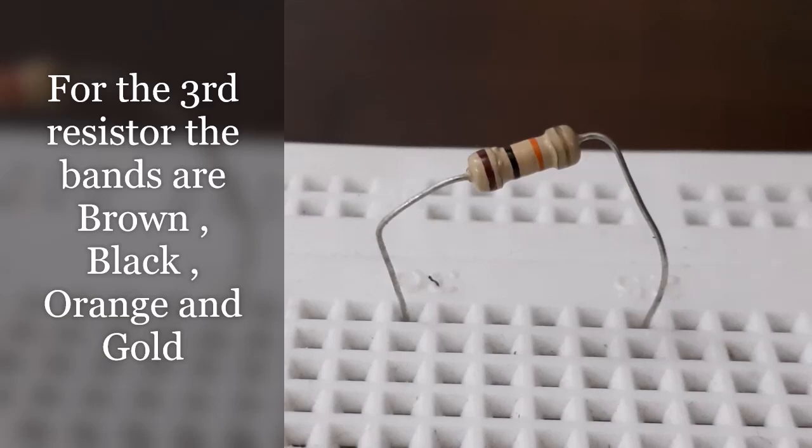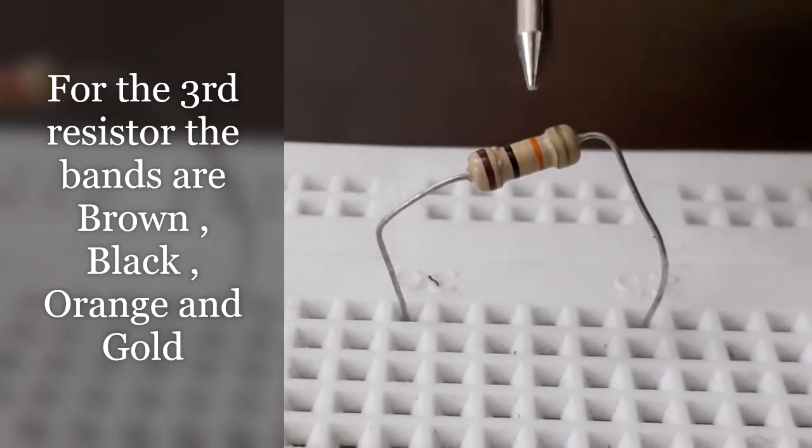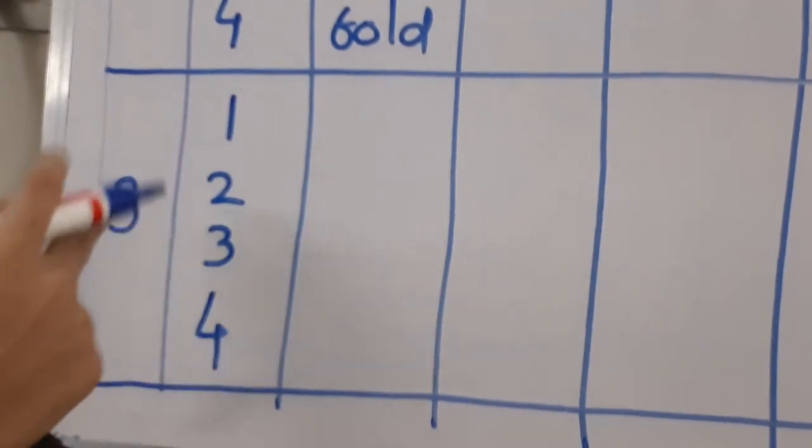Now let us do the same for the third resistor. First band is brown, second one is black, third one is orange, and the fourth one is gold.